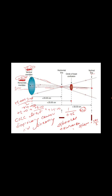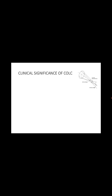The Circle of Least Confusion is at the dioptric center, not the linear center — linearly it may differ, but dioptically it is centered. The Circle of Least Confusion is the best image position for a sphero-cylindrical lens. We try to place the Circle of Least Confusion at the retina whenever we refract a case, in order to obtain the best possible image and best vision for the patient.